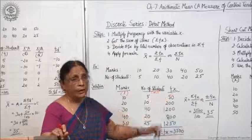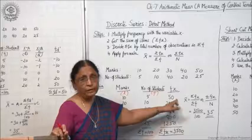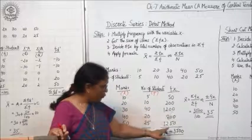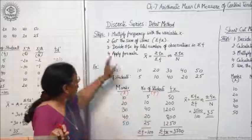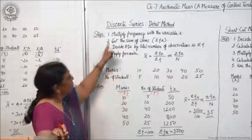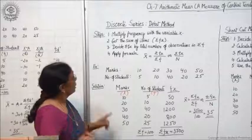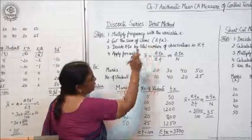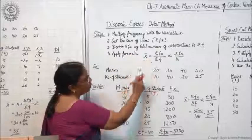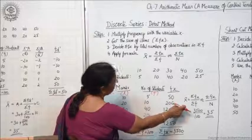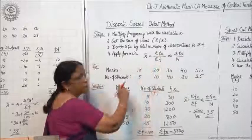This means you have to calculate σfx and σf to get the arithmetic mean. How will you get σfx? By multiplying x with f, you will get fx. And doing the total of the fx column will give you σfx. So the first step says multiply frequency with the variable x. Second, get the sum of items, that is σfx. Third, divide σfx by total number of observations and apply the formula x̄ = σfx / σf.